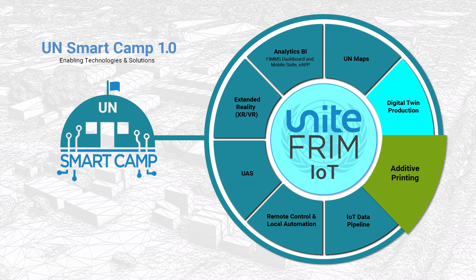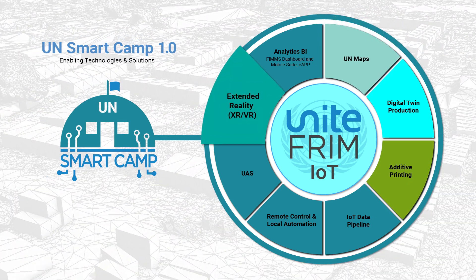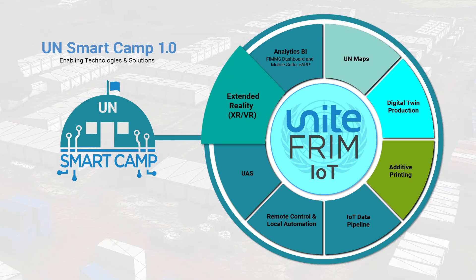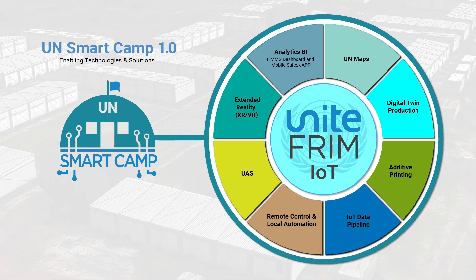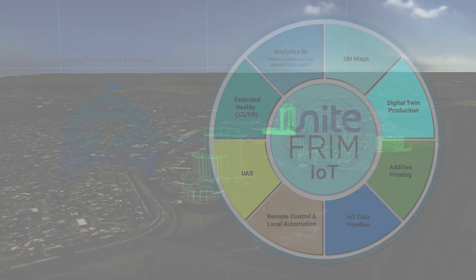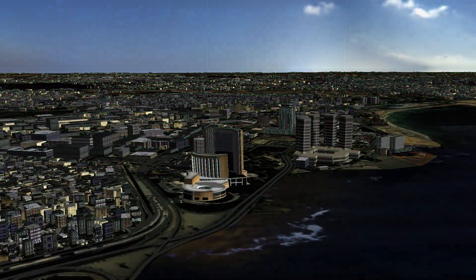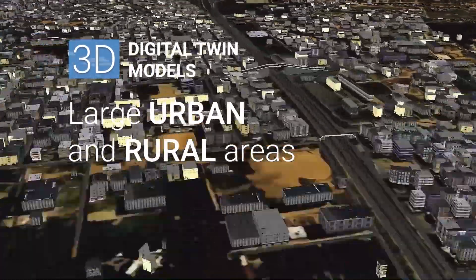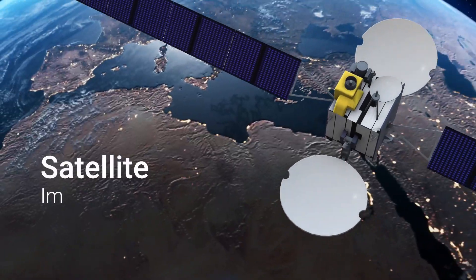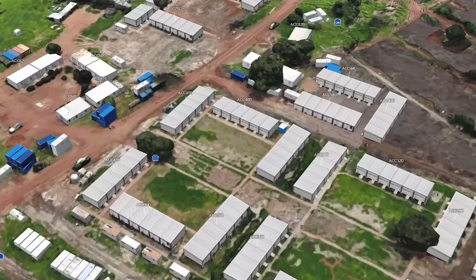Alongside additive 3D printing, UN Maps, extended and virtual reality, and other enabling technologies and solutions, UNGSC can support the creation of 3D digital twin models for large urban or rural areas through satellite imagery techniques, as well as more detailed models.